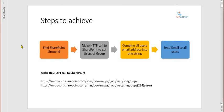So how can we do that? What we are going to do is make a REST HTTP call to SharePoint to get the group details, get the users in the group, combine all those user emails into a comma-separated string, and then send an email to that combined string of email addresses.